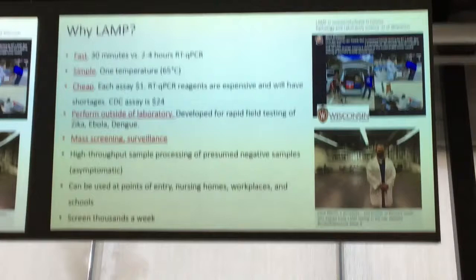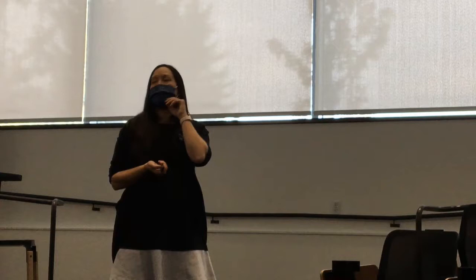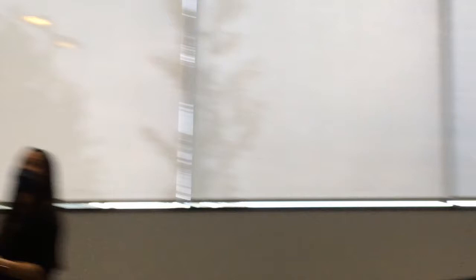You need no experienced personnel to do it, no expensive equipment. And you can see the changes by eye — it's colorimetric. If you look here in my lab: pink is negative. You mix together all these solutions — the primers, the enzyme — and it's actually pink. It turns yellow when there's genomic material present, indicating a positive result.